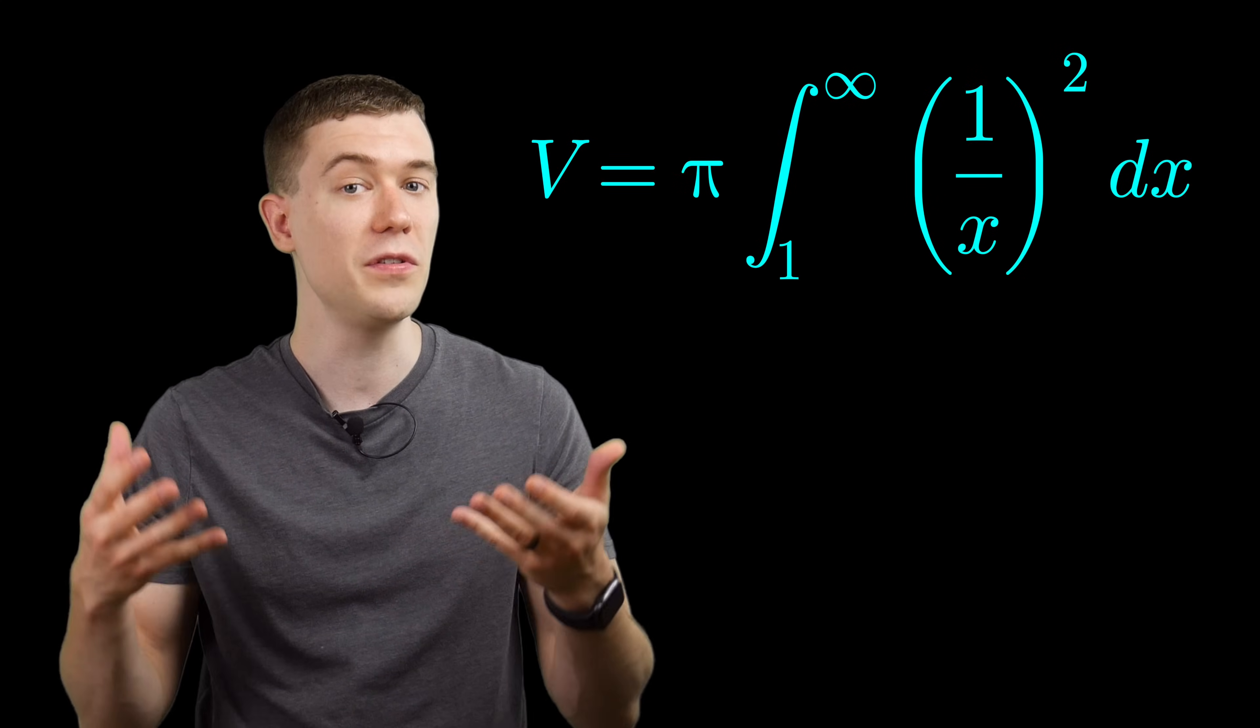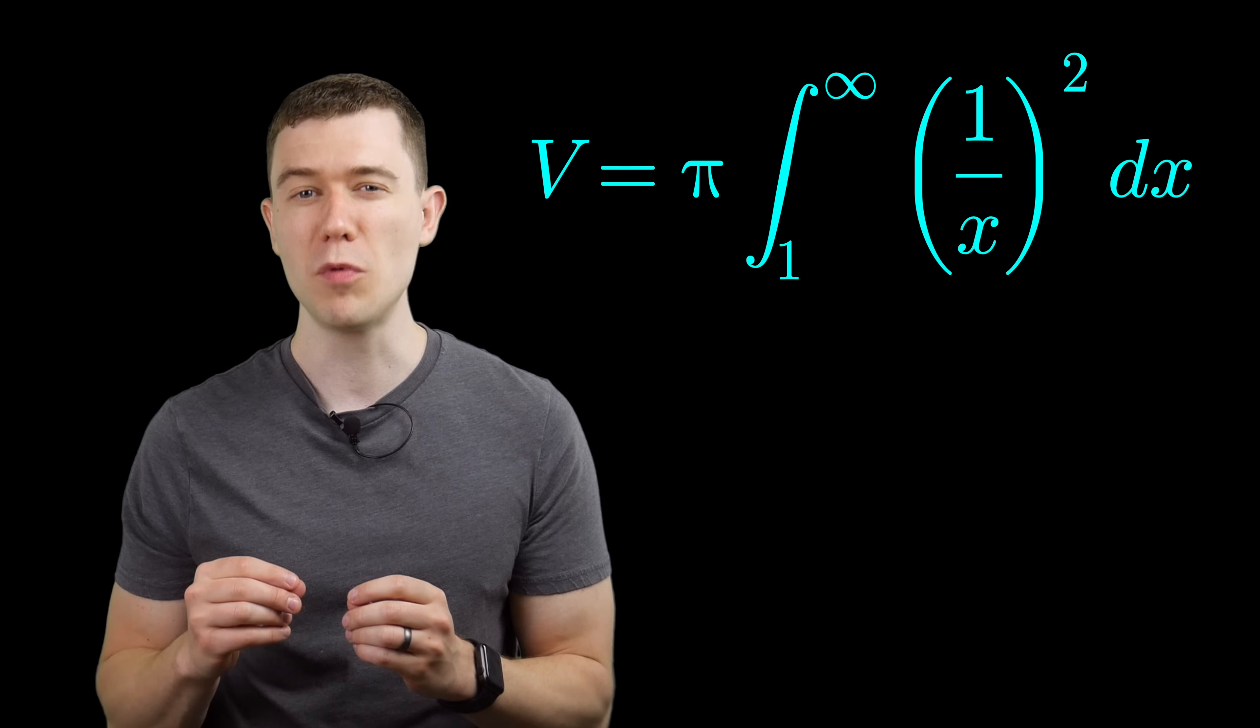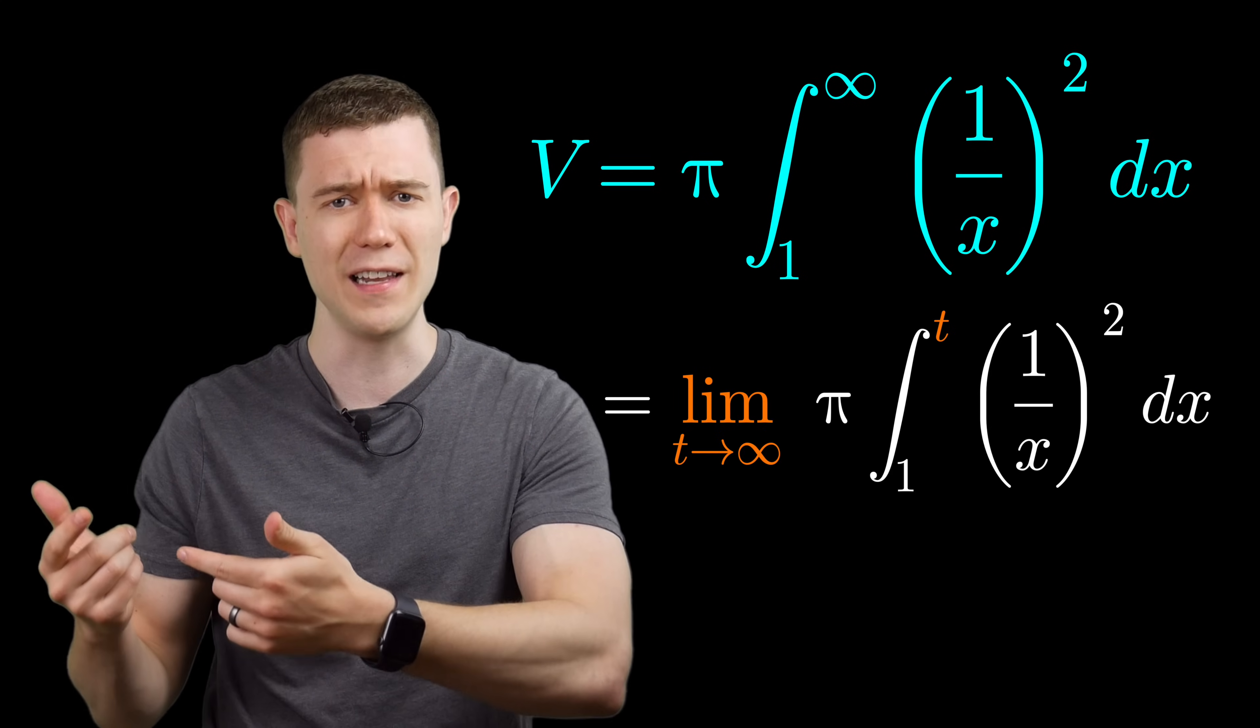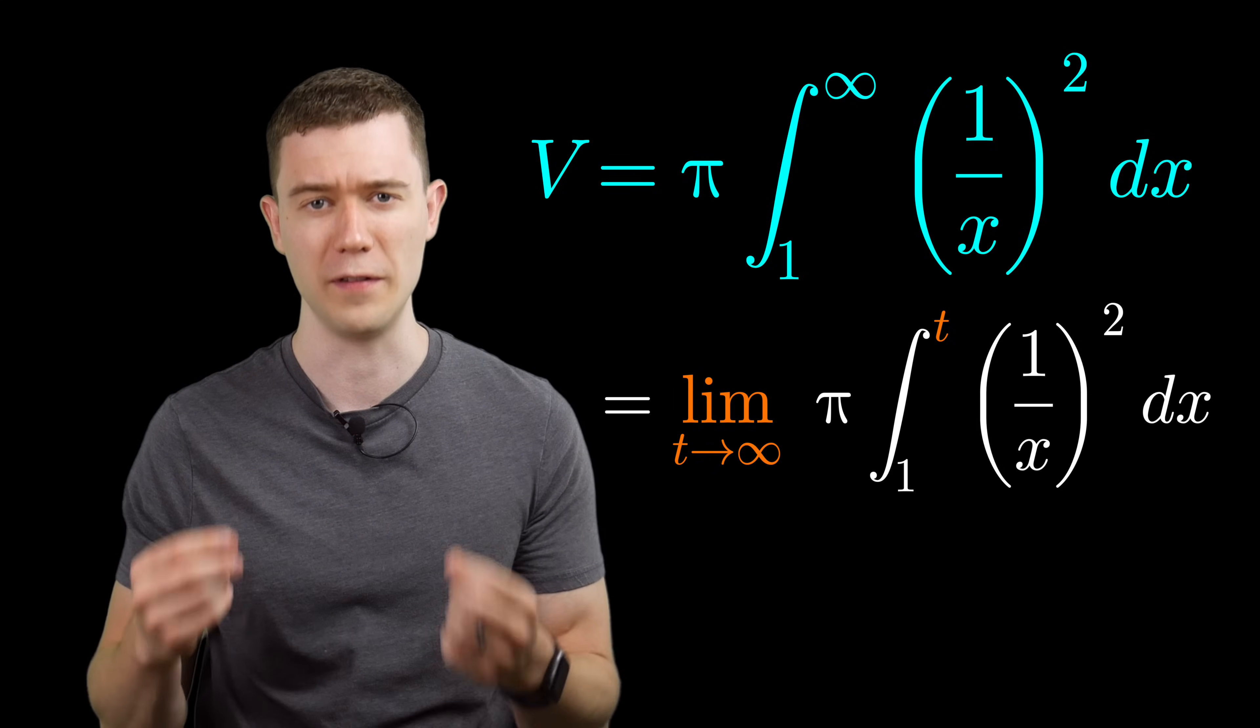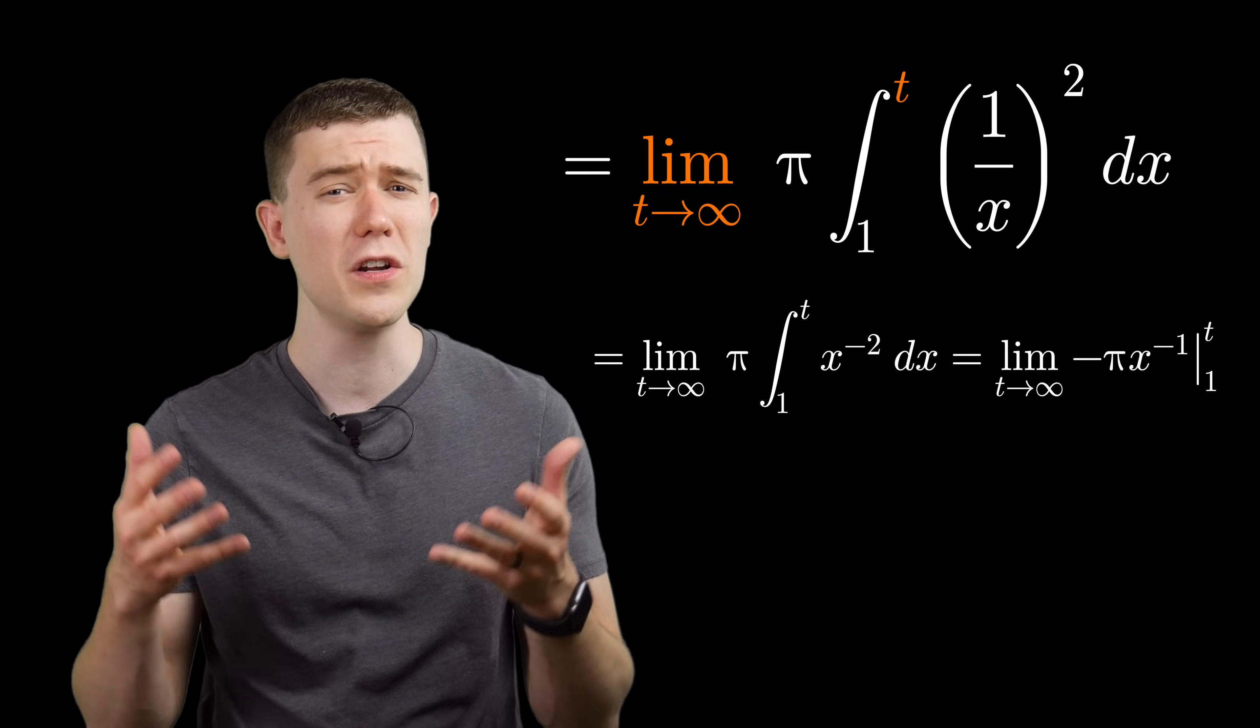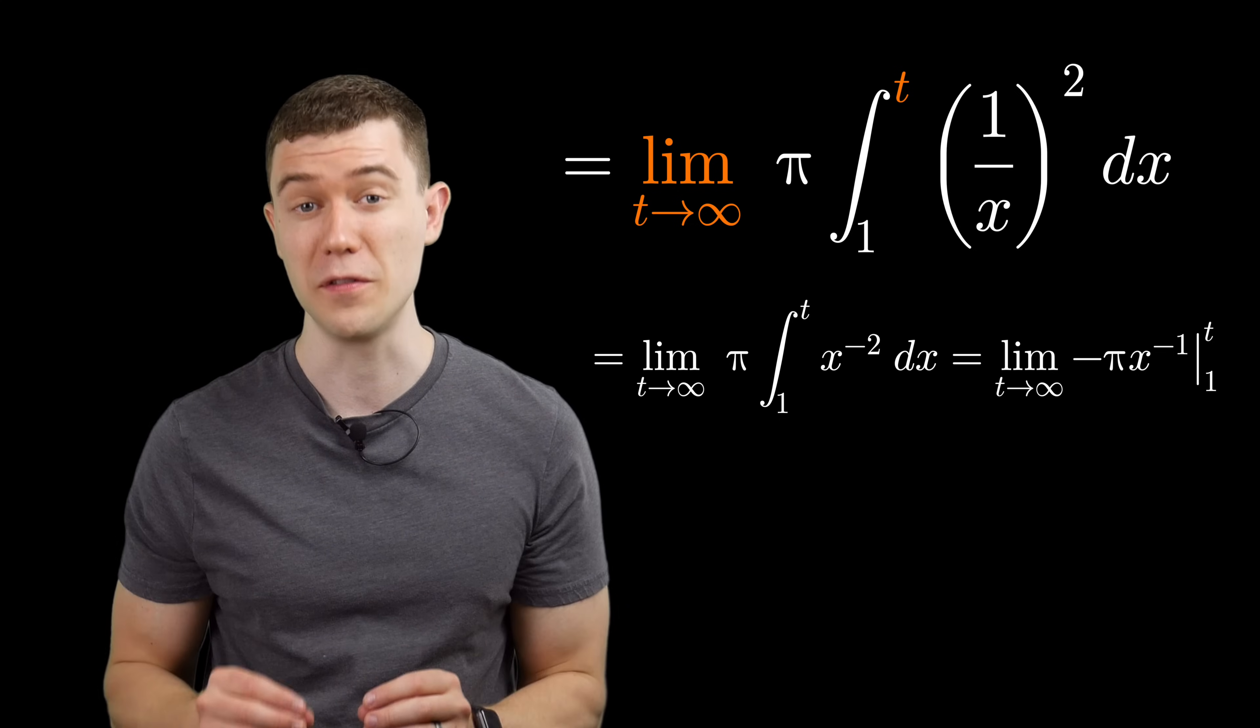Now what we have is an improper integral. We solve them essentially the same way we solve regular definite integrals, but we replace the upper bound here, the infinity with a constant. And then we'll take the limit as that constant tends toward infinity. Take the antiderivative of one over x squared using the reverse power rule, and then evaluate using the fundamental theorem of calculus.